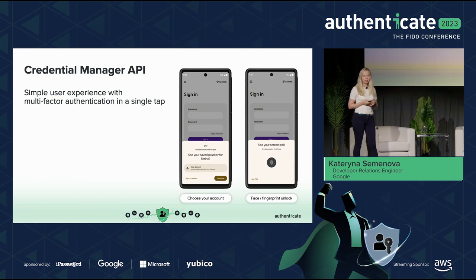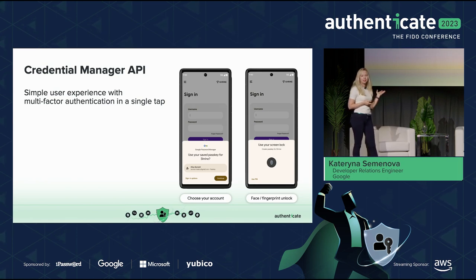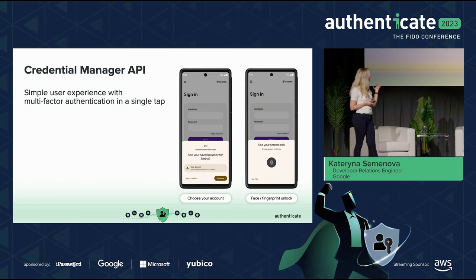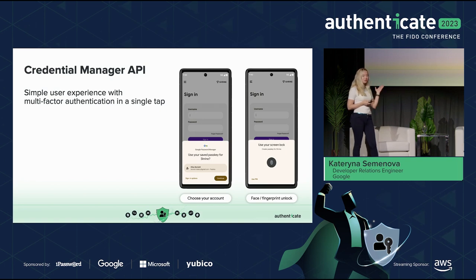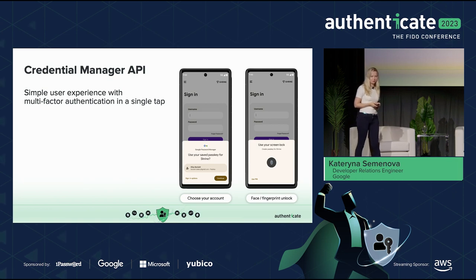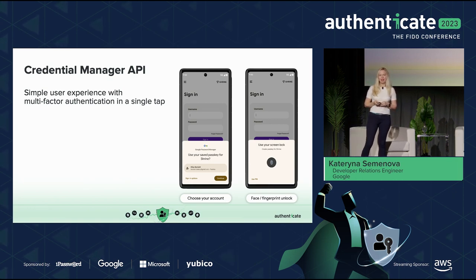Users just need to select their account to authenticate, and if they use PassKeys, they just need to unlock their screen — very simple authentication. With one single step, they also get multi-factor authentication. So it's simple UI for users, one single API for developers, and multi-factor authentication built in.